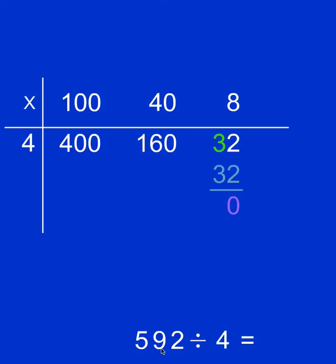So the answer is 592 divided by 4 equals 148.